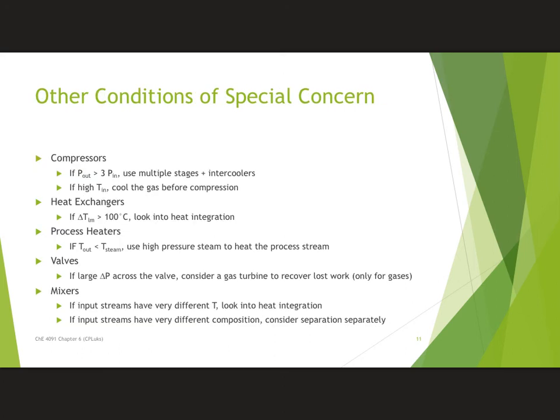For compressors, we really can't increase the pressure more than three-fold in a single stage, because it gets so hot that we end up with materials of construction problems and may have failure. Typically, we'll increase pressure three-fold, add a cooler, and then have a second stage of the compressor—repeating for as many stages as necessary. If you have a high temperature coming into a compressor, go ahead and cool the gas before you start compression; that will also save you money.